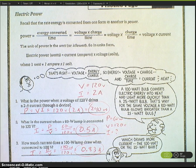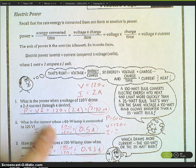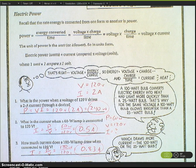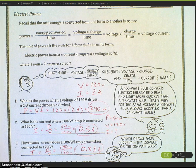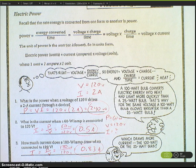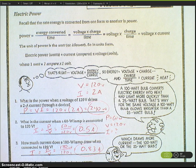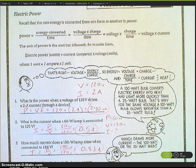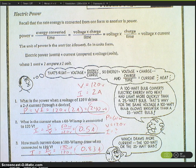Number two, we take the same equation but we're solving it for I, so we divide both sides by V, giving us I equals power divided by voltage. That's 60 watts divided by 120 volts, giving us 0.5 amps.